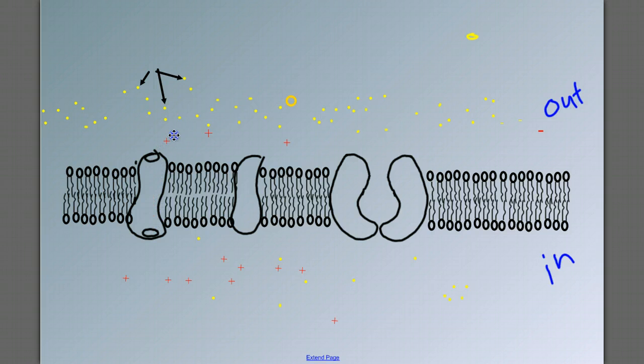But we know that ions have a difficult time getting through the bilipid layer. But if there's a channel provided for them by a protein, then we have a path for these ions to move down their concentration gradient.